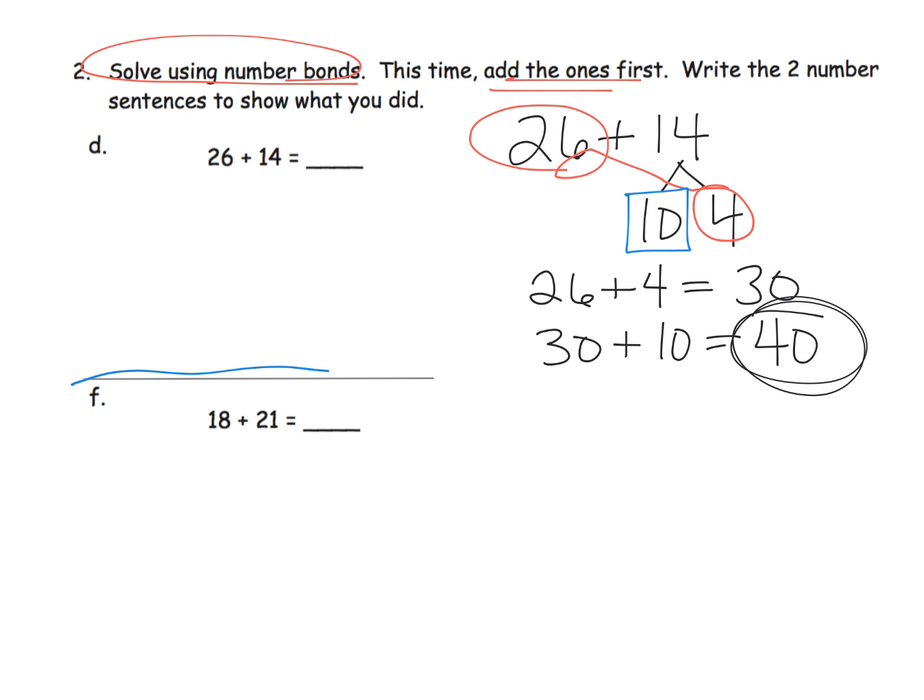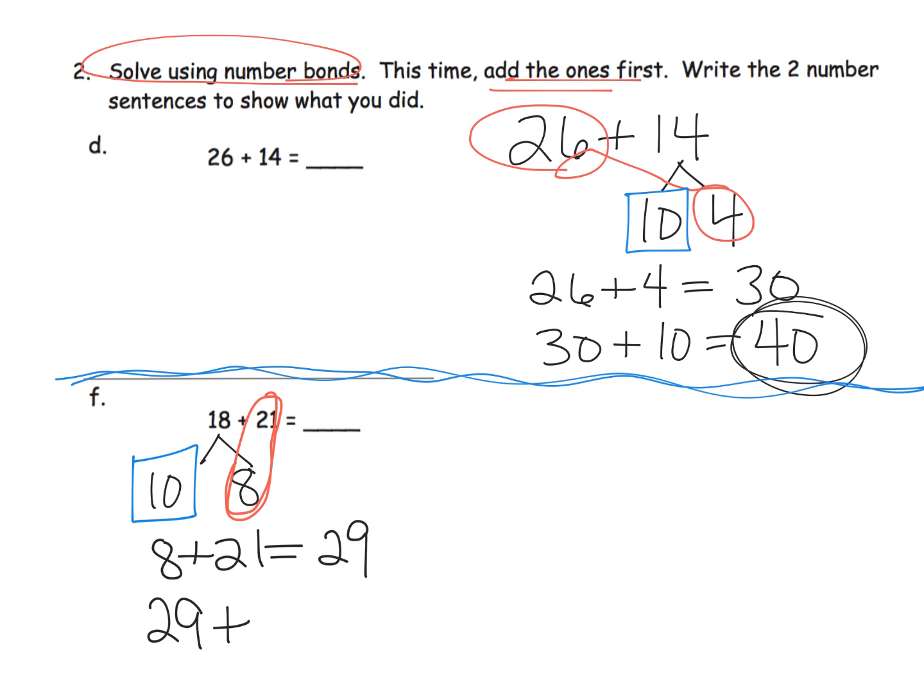Now, just to do that second problem down here, and I'm going to write it, oh, we could do it way over here. So let's decompose that 18, because once again, we are decomposing the number in the teens, and so that's 10 and 8. And because we're being asked to add the ones first, this time we've got 8 and 21. So we're going to add 8 plus 21. That gives us 29, and then we're going to take that 29 and add in the 10, because that's what's left over. And when we add in that 10, we get 39. And that is our final answer.